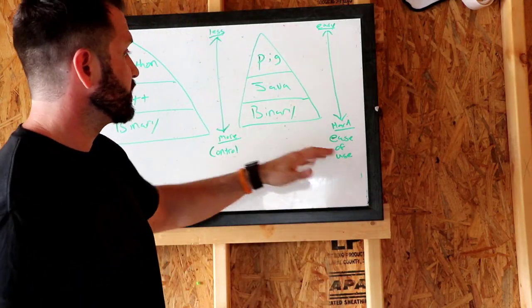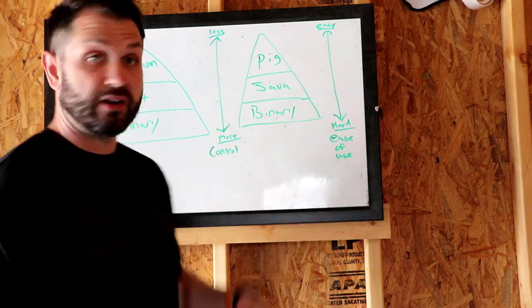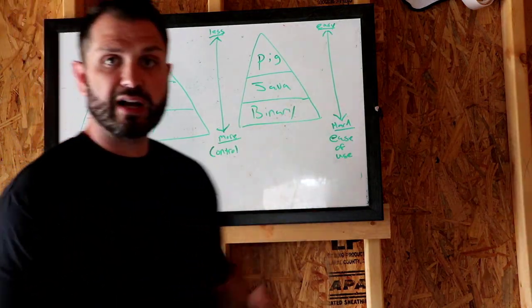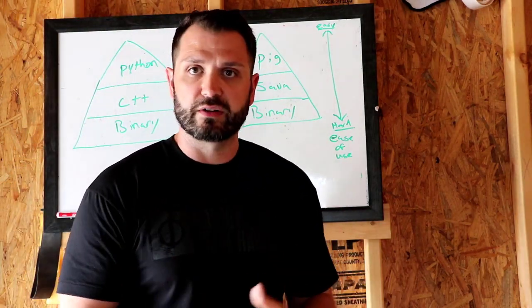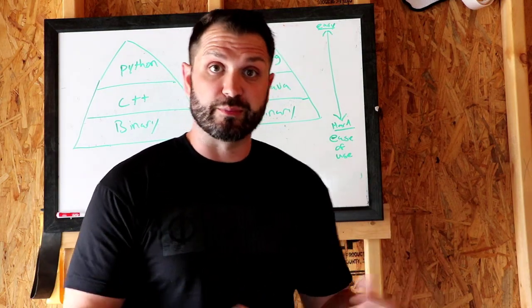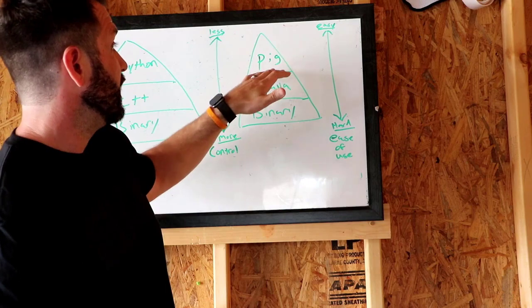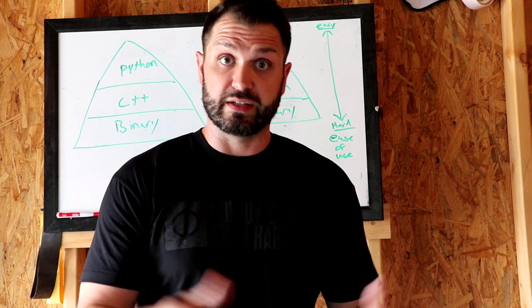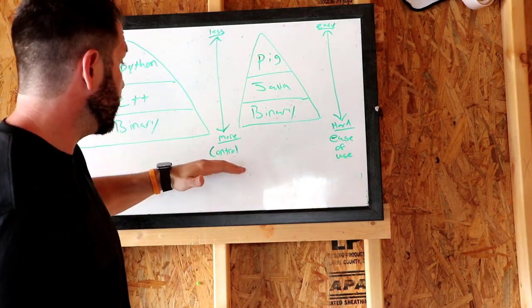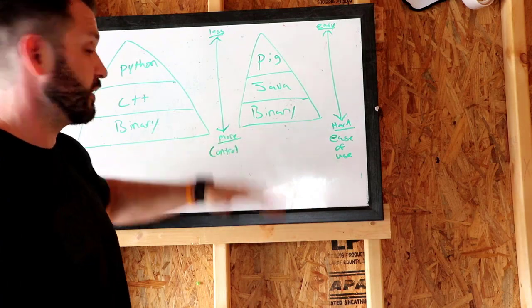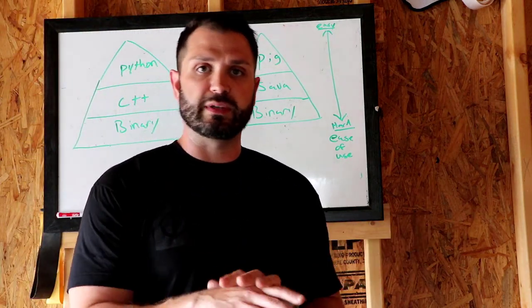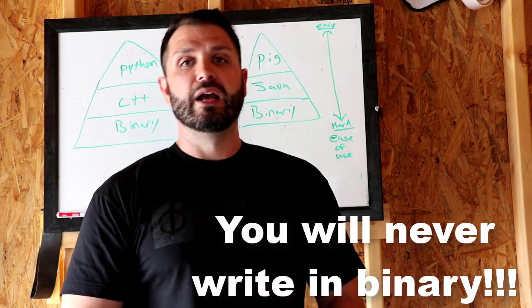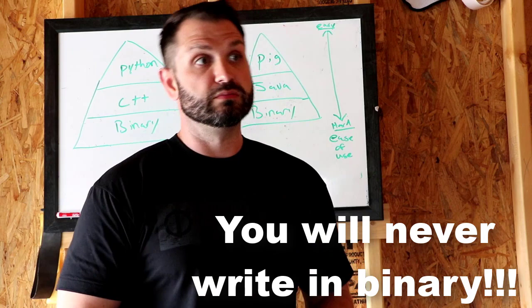You could write your MapReduce job in Java or in Pig — but with anything, it's all built on binary code. It's a way to write code and make it easier. Writing in binary is really hard; you have full control but it takes a lot more lines of code. As you move up the stack into Java you've got your compiler, the JVM, more libraries, which makes things easier. And then Pig as a higher-level language is a lot easier and more folks can actually use it. But with each layer, you're giving up some control.